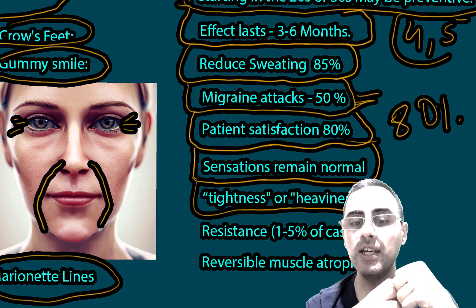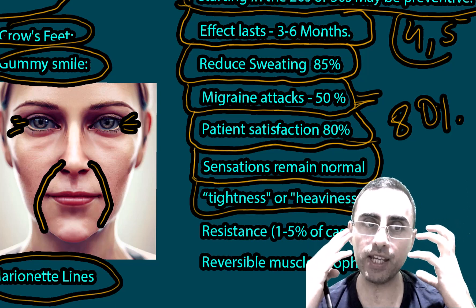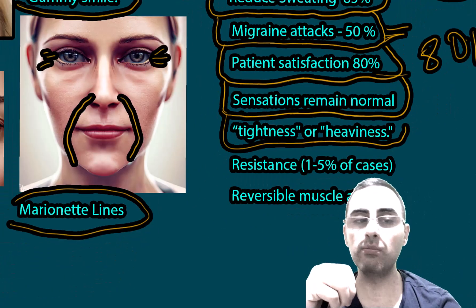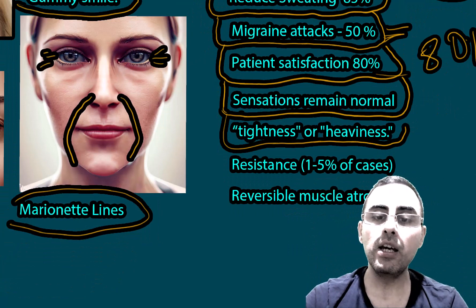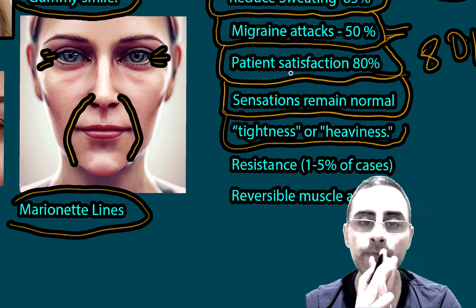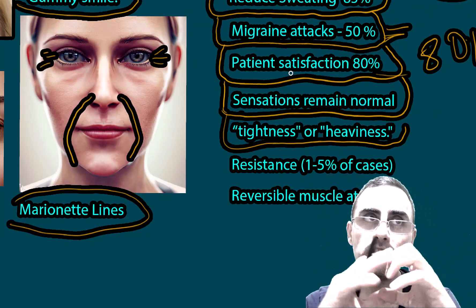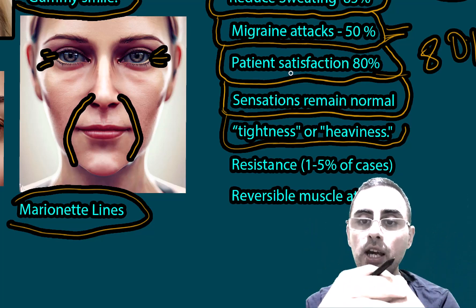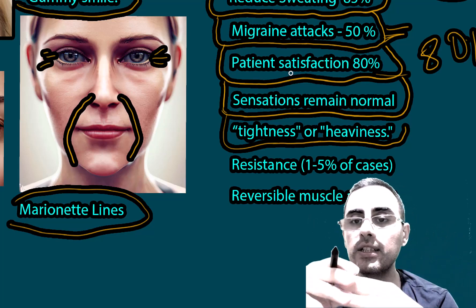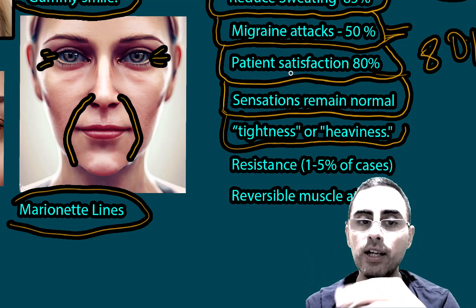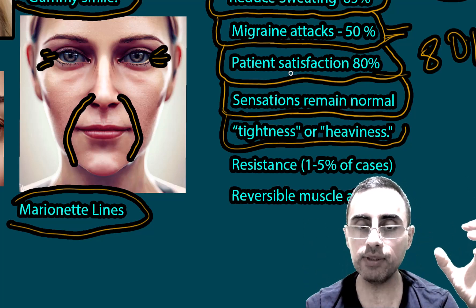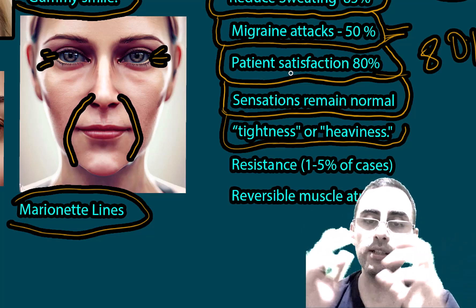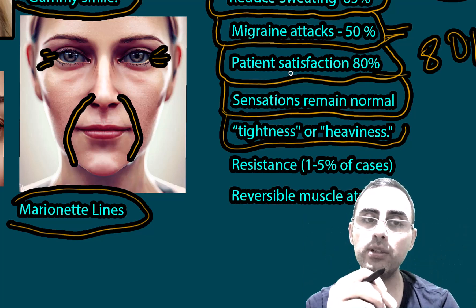Botox injections typically require repetitive injections every four to six months. Over time, the interval between injections can increase and lower dosages can become more effective, though this varies by individual.